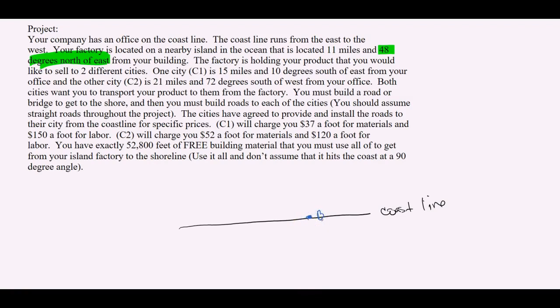And then I need to draw this. So north of east. Well, this is the west and this is the east, right? So in fact, I think I'm going to move my building a little further over to this side. How about that? We'll call that my building. Because it looks like for this problem, 48 degrees north of east, it's going to look somewhere like that. That's 48 degrees north of east and it's going to be 11 miles away. So I'm just going to label that distance as 11 miles. That's going to be my island where my factory is. All right. F for factory.